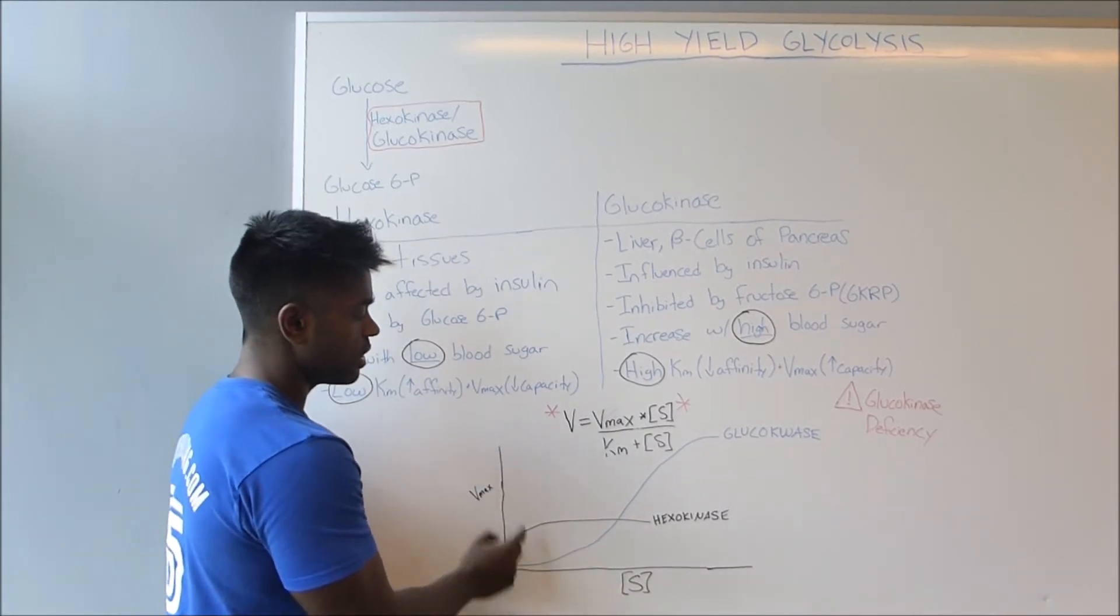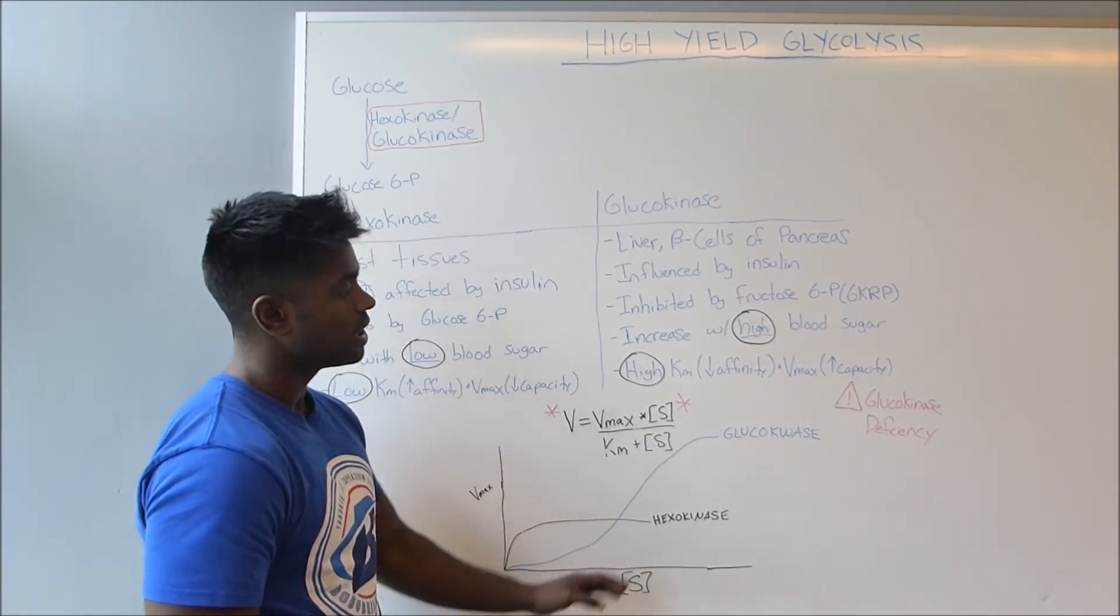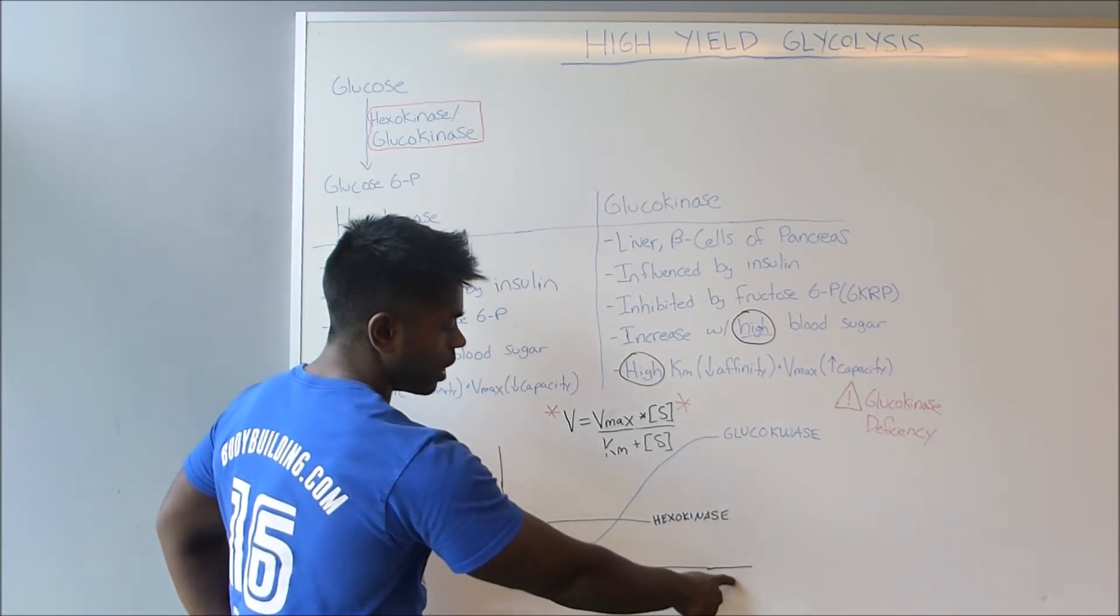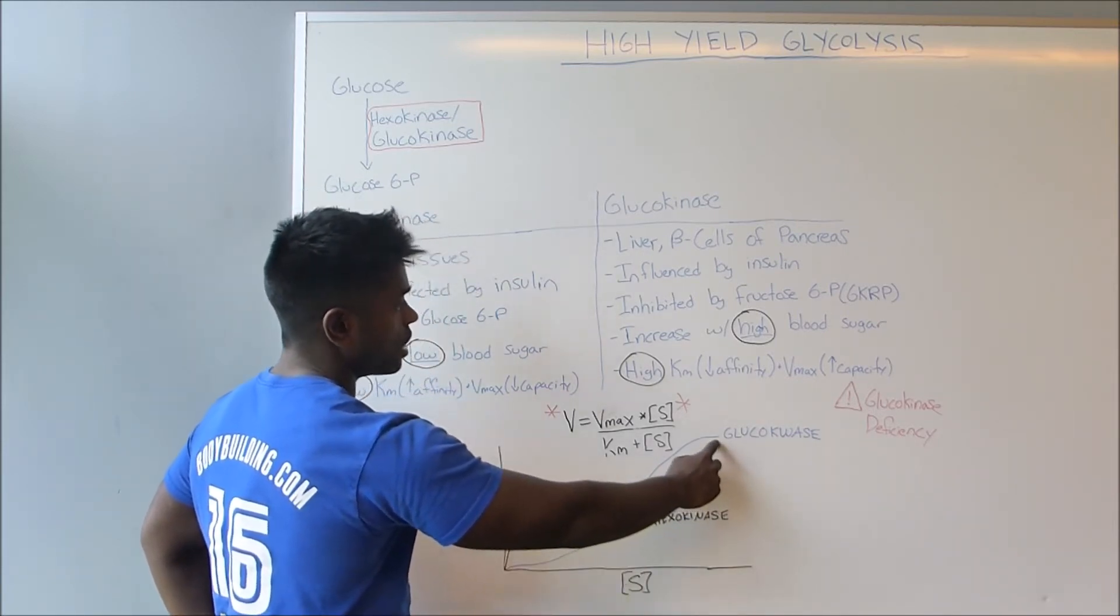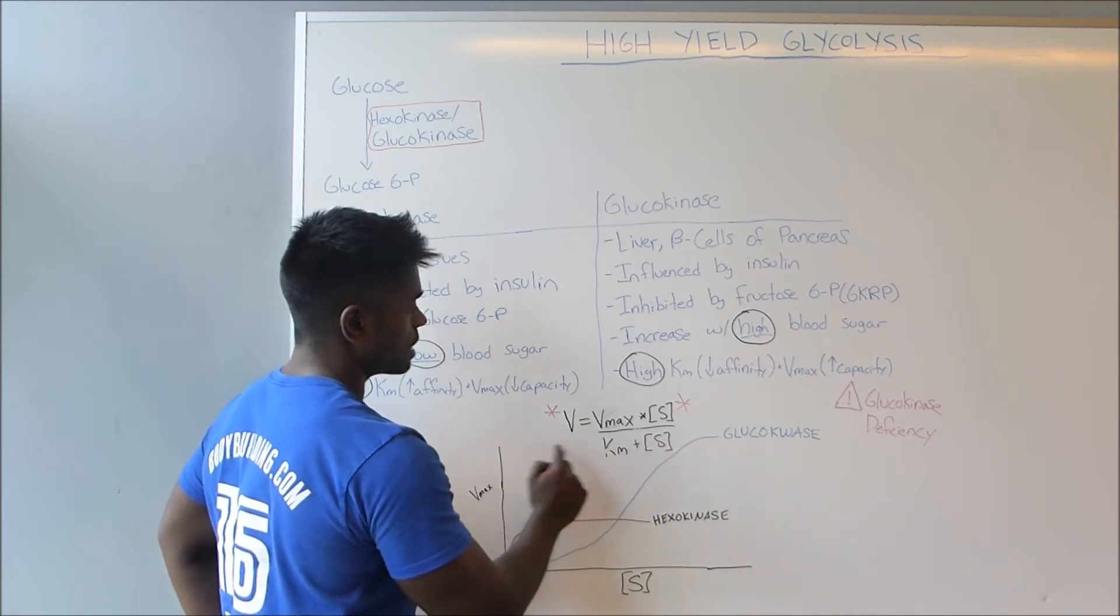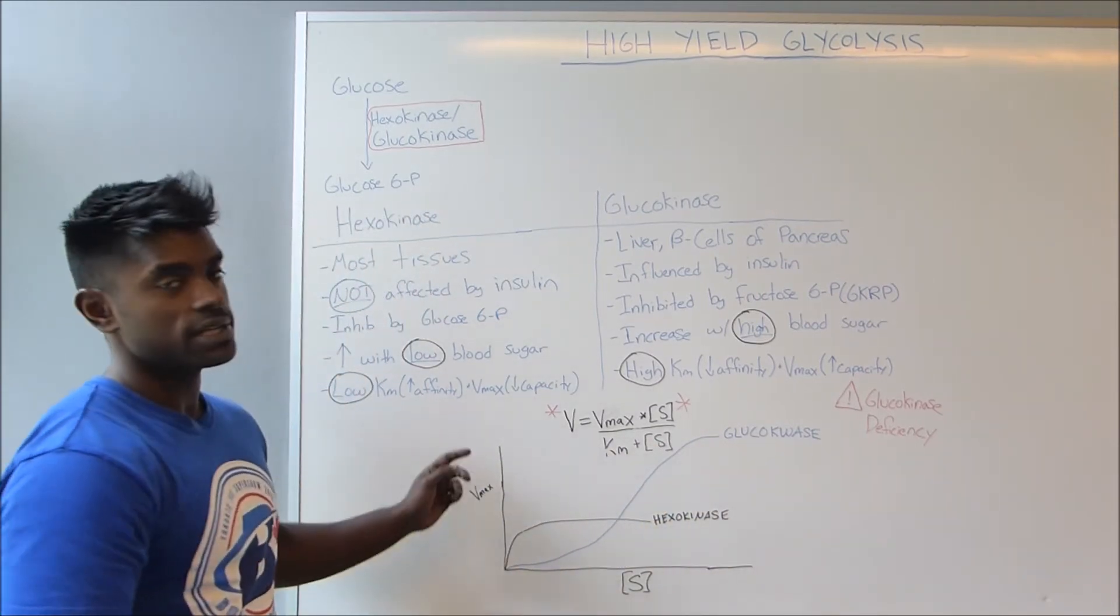That's why we can see in terms of the enzyme kinetics chart that here at glucokinase, the substrate requirement is much higher, but as well, the Vmax is also much higher. So that is important to know.